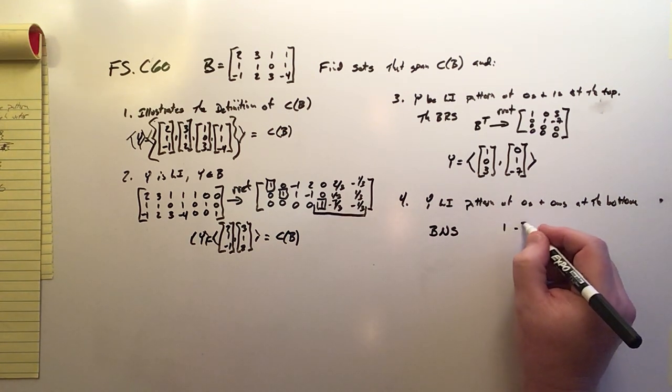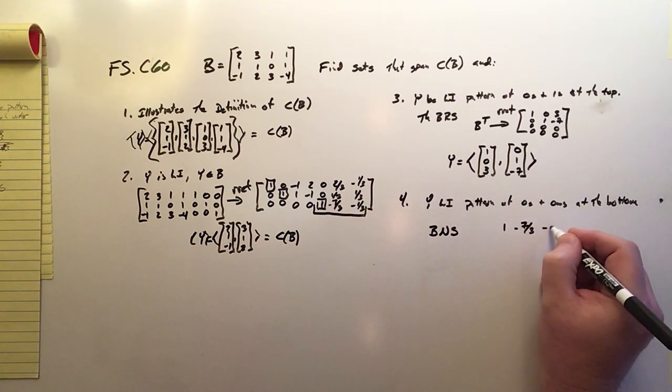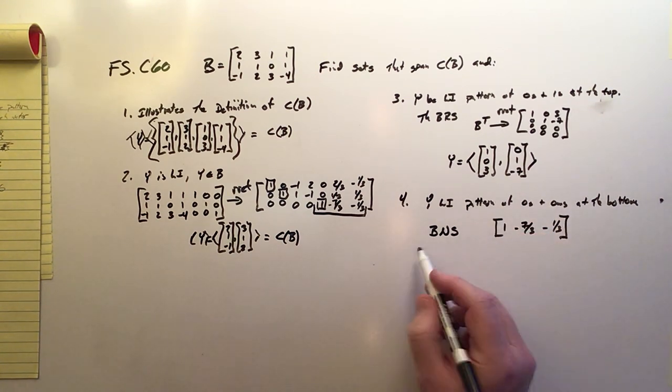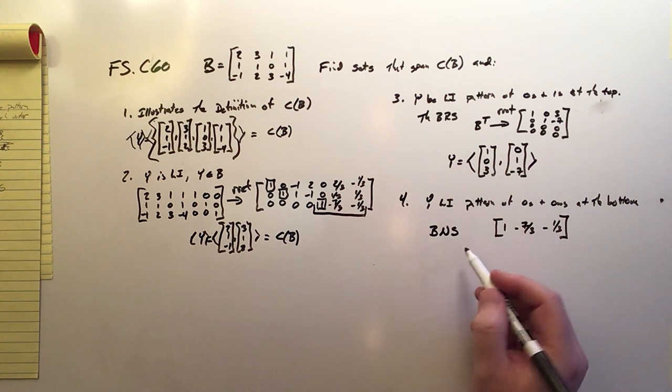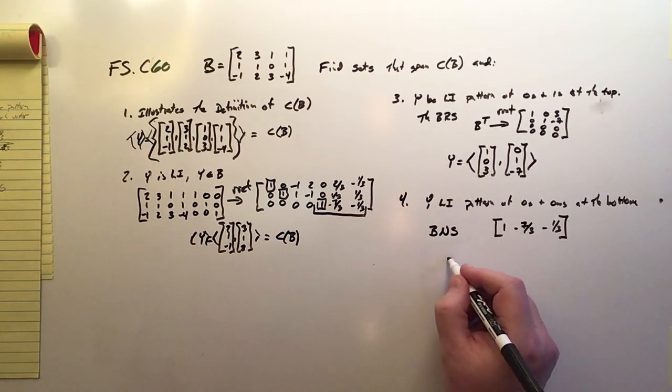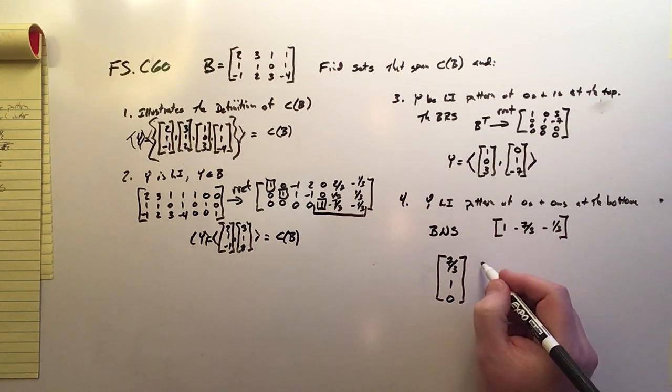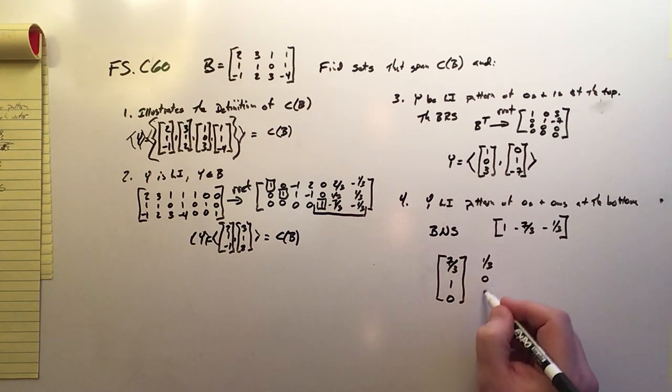So it's 1, negative 7 thirds, and negative 1 third. And if we apply the rules for the BNS, then we get two column vectors. The first one is 7 thirds, 1, 0. And the second one is 1 third, 0, 1.